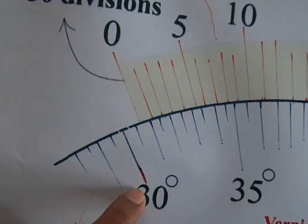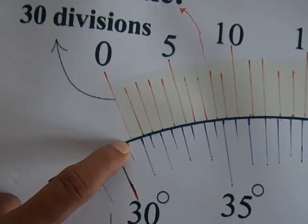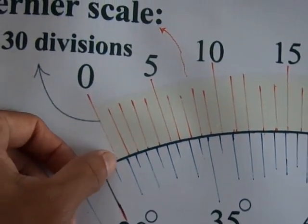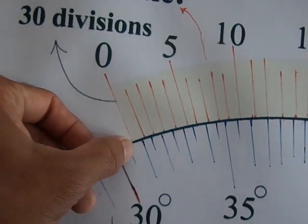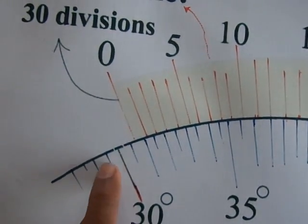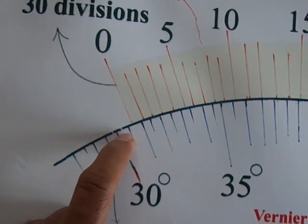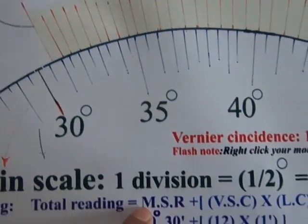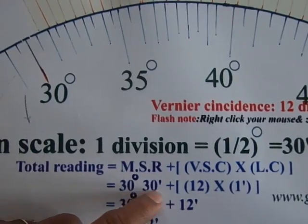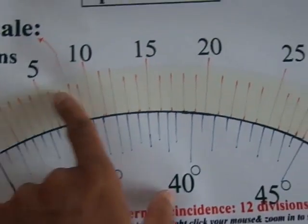The vernier scale starting point is here, so it has crossed 30 degrees and half a degree. So put together, the main scale reading is 30 degrees and 30 minutes.